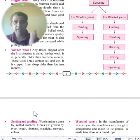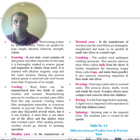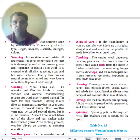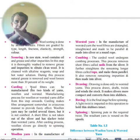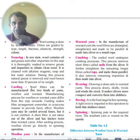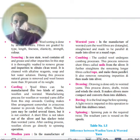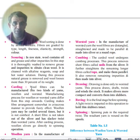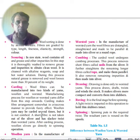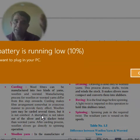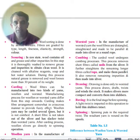Carding: there are two types of yarn — woolen and worsted. Carding arranges fibers in a crisscross pattern rather than parallel. In woolen yarn production, fibers are carded many times but not combed; after carding they go directly to spinning.